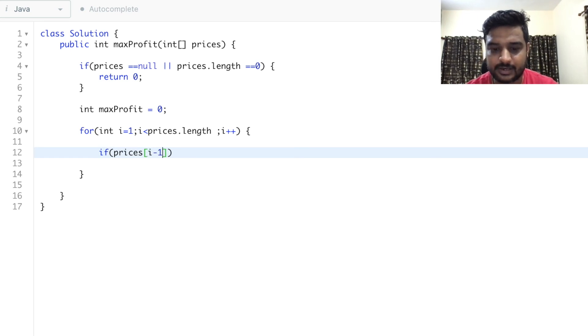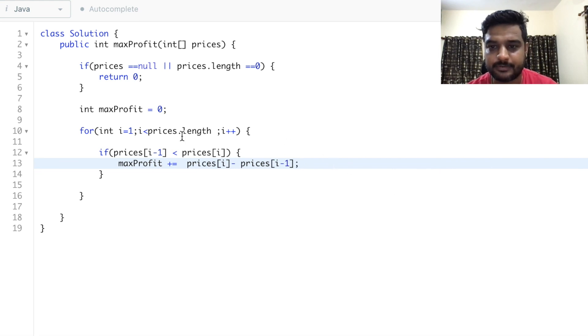If prices[i-1] is less than prices[i], meaning the previous value is less than the current value, then maxProfit would be plus equal to the difference of these two, so prices[i] minus prices[i-1]. We'll keep running this and whenever the current price is greater than the previous price, we'll add the difference to maxProfit.